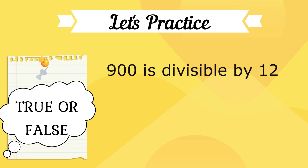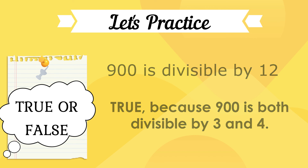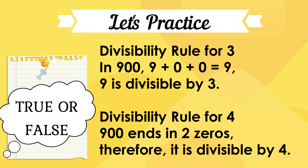True or false? 900 is divisible by 12. The answer is true, because 900 is both divisible by 3 and 4. Divisibility rule for 3: 9 plus 0 plus 0 equals 9, and 9 is divisible by 3. Divisibility rule for 4: 900 ends in 2 zeros, therefore it is divisible by 4.